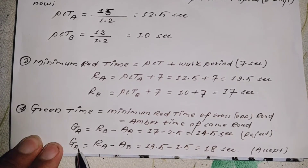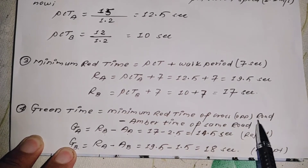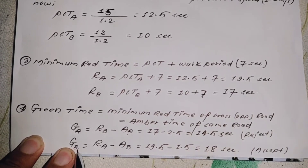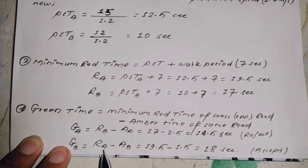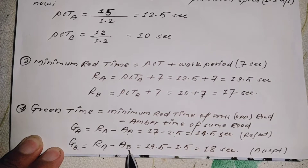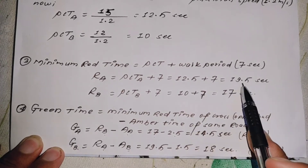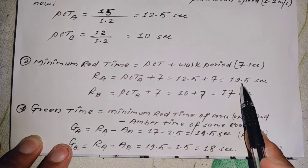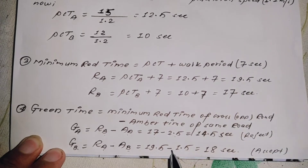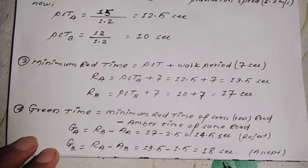Green time for Road B = minimum red time of the opposite road (Road A) minus amber time of Road B. Green time B = 19.5 − 1.5 = 18 seconds.